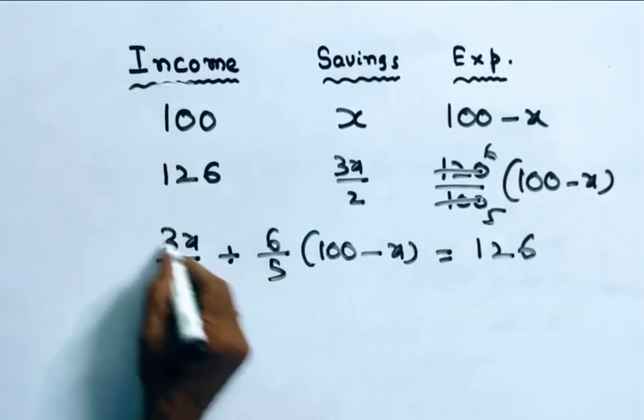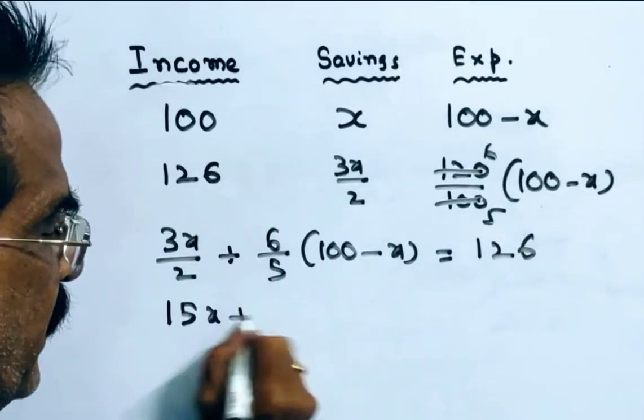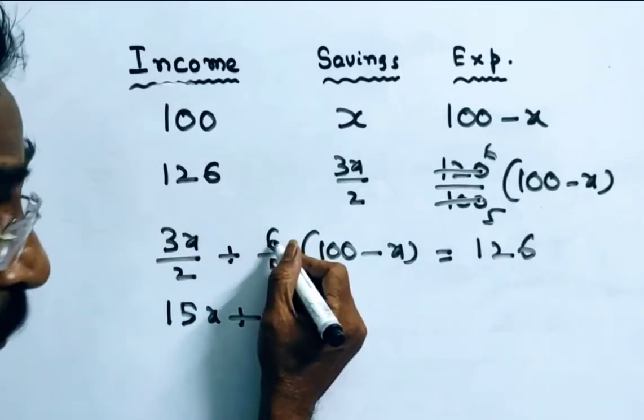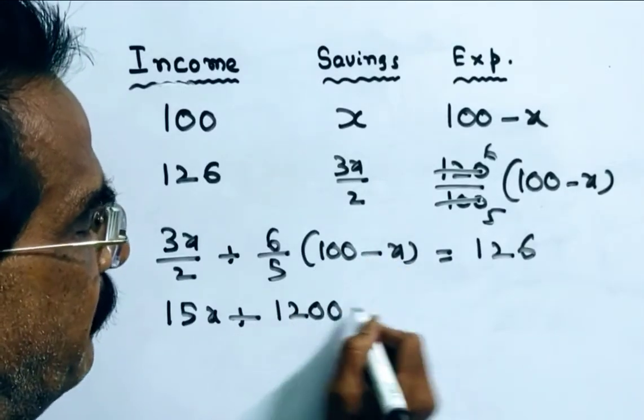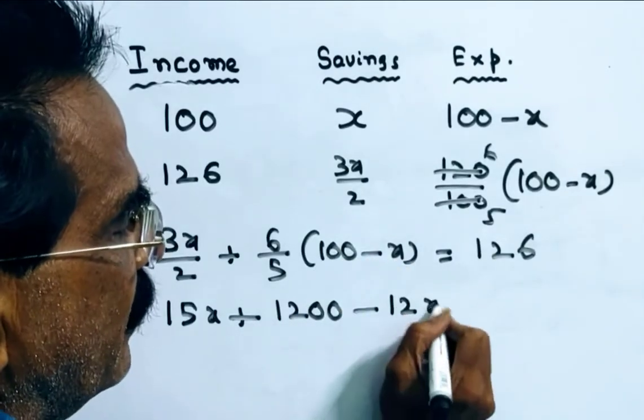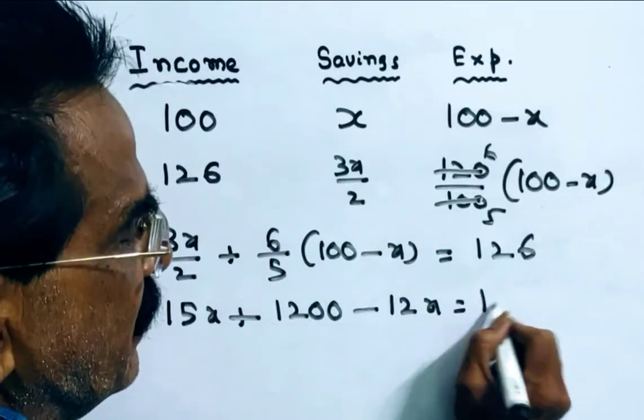Friends, 3 is 15X plus 12 to 6X. 12 into 100 minus X. That is, 1200 minus 12X is equal to 25 to 10 into 126, 1260.